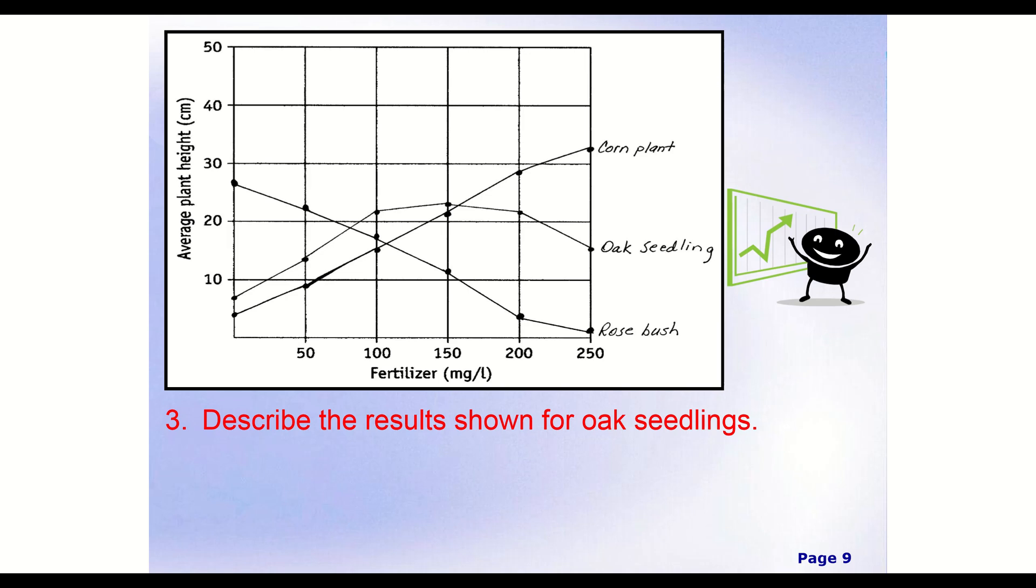Next, so our third question is describing the results shown for the oak seedlings. So now this time, we are only going to be looking at the oak seedling. So an oak seedling would be a small oak tree, kind of like a baby oak tree. All right, and so then that's going to be this line here. So we want to be careful that we're following the right line. Otherwise, we can get the wrong information.